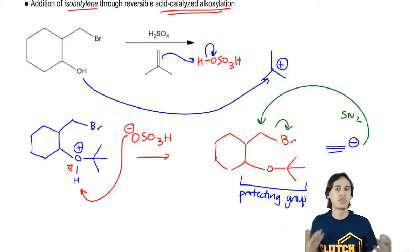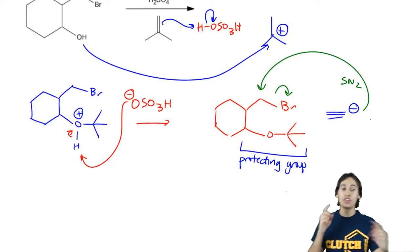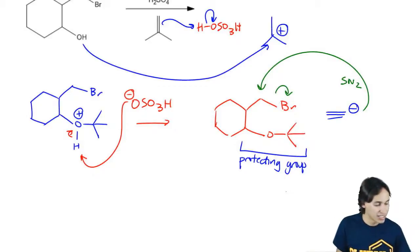So that's the advantage of protecting groups. They allow us to react with just the thing we want and to ignore the thing that we don't want to react with. Now you might be wondering, well, Johnny, what does the final product look like? Well, what we would do at this point is that after this reaction is over, we could remove the protecting group. Why is that? Because we said this reaction has to be easily reversible.